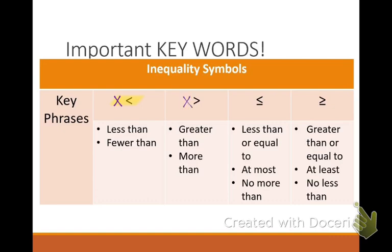When it's opened up towards the variable, that means greater than. What do you notice that's different about the third and fourth columns and their symbols? The symbol or the inequality has a line under it. Yes, it has a line under it, and that line is significant. That line means that an acceptable solution to my inequality could also be equal to that number.